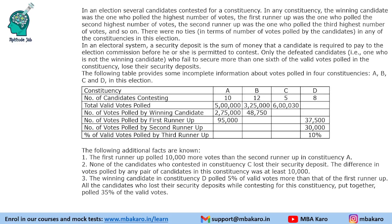The first runner-up was the one who polled the second highest number of votes. The second runner-up had the third highest, and so on. There were no ties in terms of number of votes polled by the candidates in any of the constituencies.